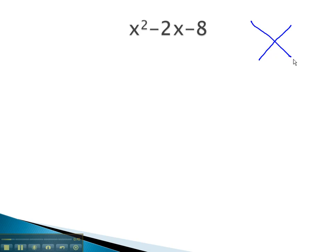Using the AC method, we would be multiplying to 1 times negative 8, which is negative 8, and adding to negative 2. We can see this is possible with 4 and 2 if the 4 is negative.